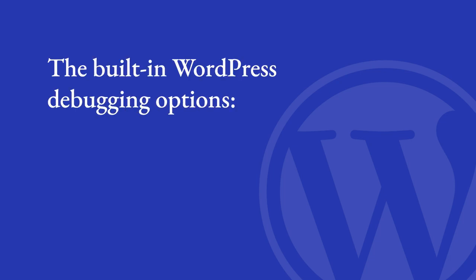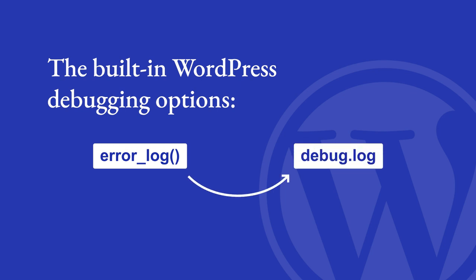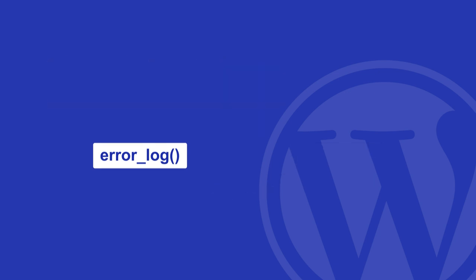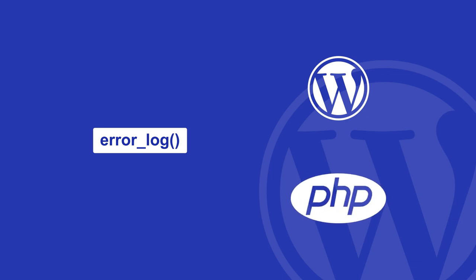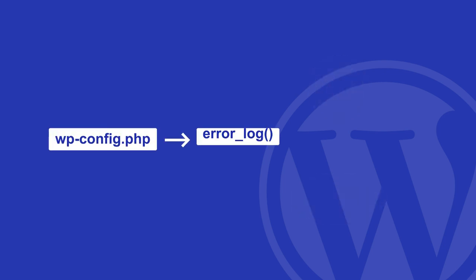As discussed in the lesson on the built-in WordPress debugging options, you can use the error_log function to log messages to your WordPress debug log file. The error_log function is not specific to WordPress — it's a PHP function that you can use in any PHP code to log messages to the PHP error log file configured on the server. However, once you enable the WordPress-specific debugging options in your wp-config file, anything passed to error_log will be logged to the WordPress debug log file.